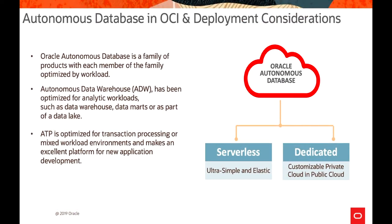When it comes to Autonomous Database in OCI, we have basically two offerings: serverless and dedicated. This is a family of products where each member is optimized by workload. We have Data Warehouse, optimized for analytic workloads like data warehouses, data marts, or data lake. ATP is optimized for everything else - transaction processing or mixed workload environments - making it a great platform for any new application deployment. By autonomous, we mean everything is automatic: provisioning, scaling up and out, tuning, security, patching, and fault tolerance.